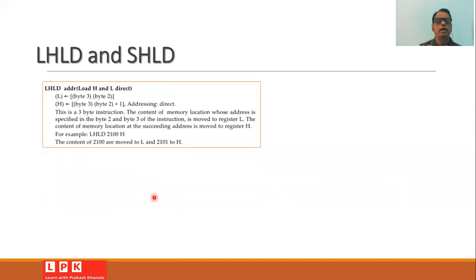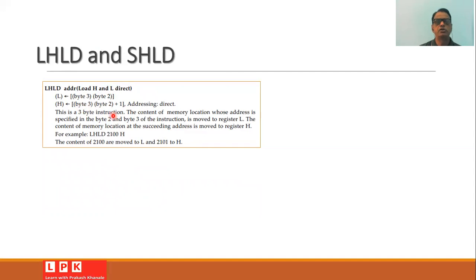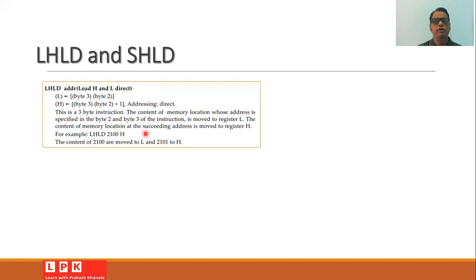Another set of instructions is LHLD and SHLD. LHLD address — load H and L direct — moves the content of the memory location specified in byte 2 and byte 3 into register L, and the content of the next location (byte 2 byte 3 + 1) into register H. This is a 3-byte instruction. For example, LHLD 2100H moves the content of location 2100 into register L and the content of 2101 into register H.